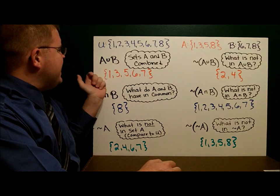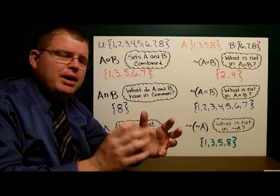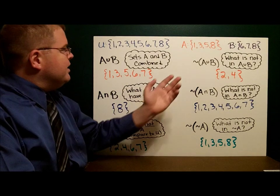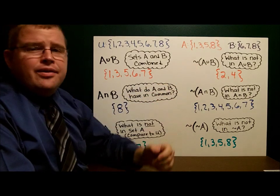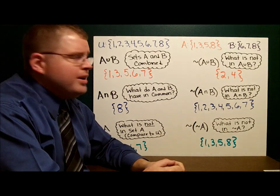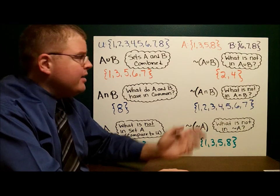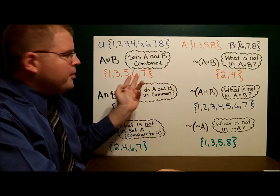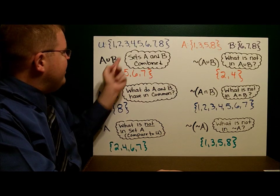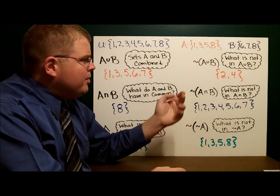The first thing they want us to do is find A union B. So we take set A and set B. Union means A and B combined. And so I have A and B combined here: 1, 3, 5, 6, 7. Now, over here it says not A union B. The little squiggle, remember, is a logic sign. It means not, or the complement of A union B. We do what's in the parentheses first and then do the outside. What is not in A union B? The numbers 2 and 4.